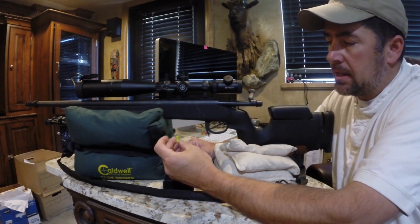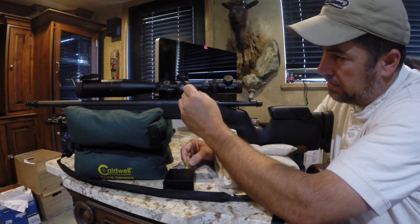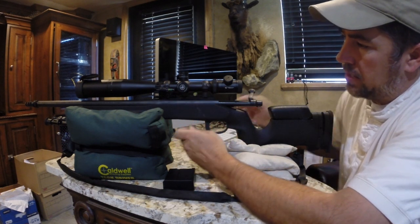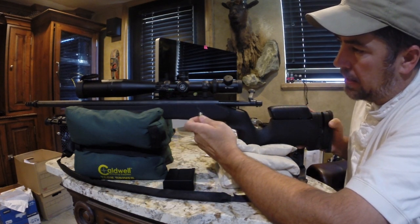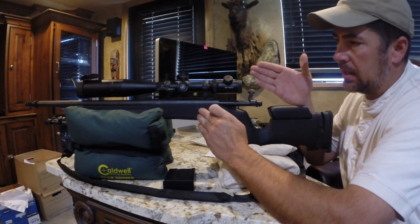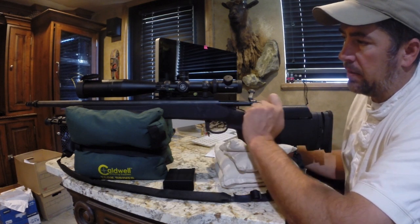Basically, the way I do it, I've got these little levels, and we're going to slip the levels on the weaver rail so I know that my gun itself has got a real nice level to it. I know that my gun is level, and we should be pretty close off that weaver rail.